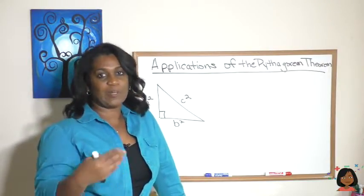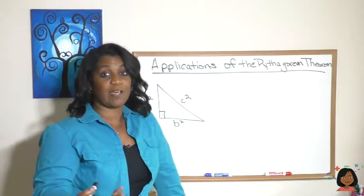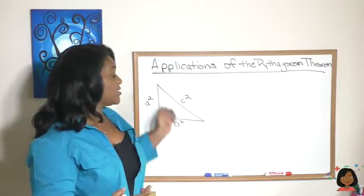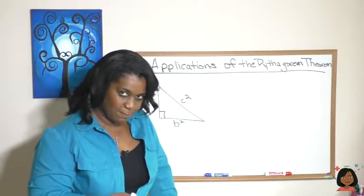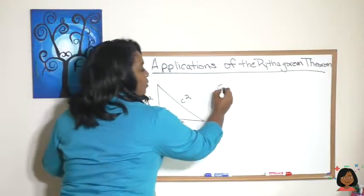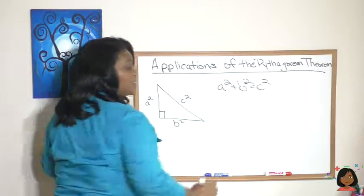You might remember that we learned about the Pythagorean Theorem just a week or two ago, and that there was a particular formula that we could use to find the length of the sides when it comes to right triangles. Remember what that formula was? It was a squared plus b squared equals c squared.